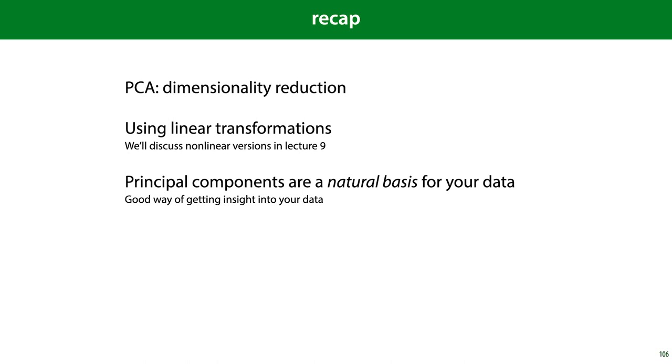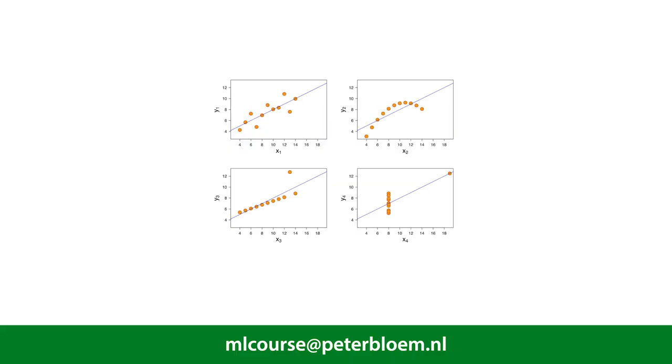So that's PCA, a dimensionality reduction method constrained to using linear transformations. And we'll discuss nonlinear versions later on. And we can think of the principal components as a natural basis for our data. And this is not just a good way of reducing the dimensionality. It's also a good way of getting insight into your data. And as we said at the start of the lecture, looking at your data and getting insight into what it looks like is an important first step in any machine learning project. In the next lecture, we'll return to building models. And specifically, we'll look at what probability theory can do for us in describing classifiers and regression models.